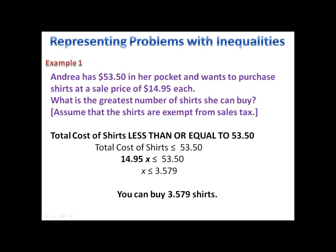But wait a minute. You're thinking, how can you buy 0.579 shirts? Do they cut the sleeves off or what exactly happens there? Well, you're right. You can't buy 0.579 shirts. The most shirts that Andrea could leave the store with is actually 3. So the greatest number of shirts she can buy is going to be 3.